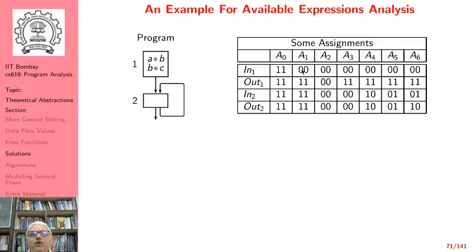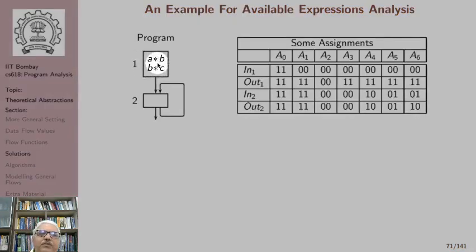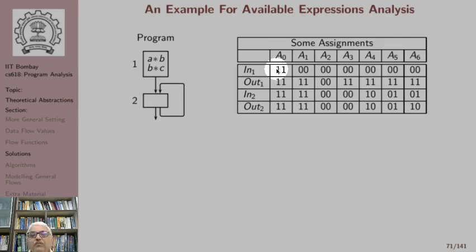Here is an example of some assignments for available expressions analysis. We have a small program with two expressions: A star B and B star C. We consider a bit vector of two bits — the first bit represents A star B and the second represents B star C. We talk about four program points: in one, out one, in two, and out two. We can associate any value with these program points. For example, associating one one with all program points means both expressions are available everywhere.